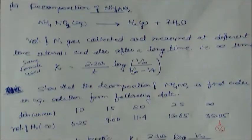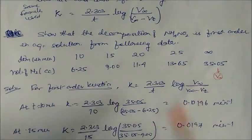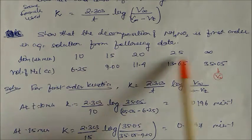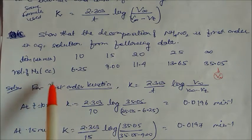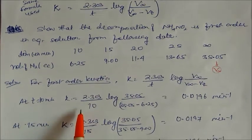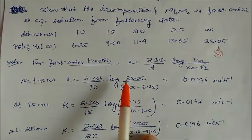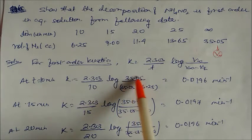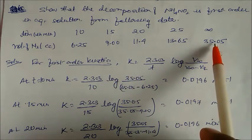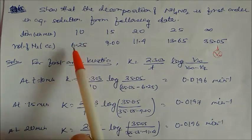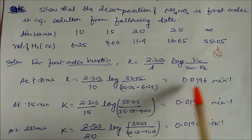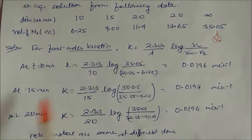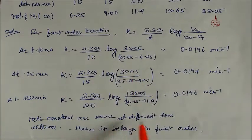Example: show that decomposition of ammonium nitrite is first order in aqueous solution from the given data. Time and volume of N₂ collected are given; at t = ∞, V∞ = 35.05 mL. For t = 10 min with Vt = 6.25 mL, for t = 15 min, and for t = 20 min, the rate constants calculated are the same at all time intervals, confirming first order kinetics.